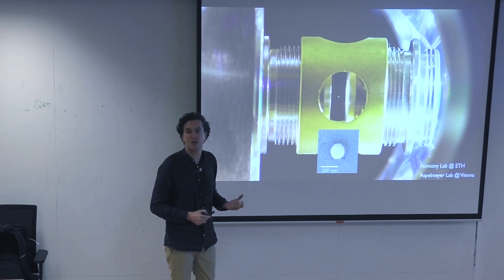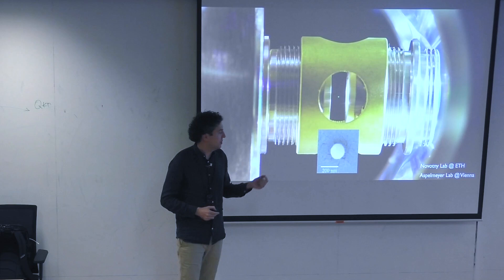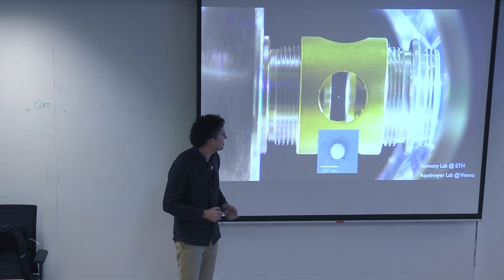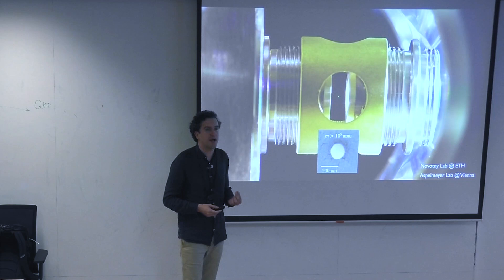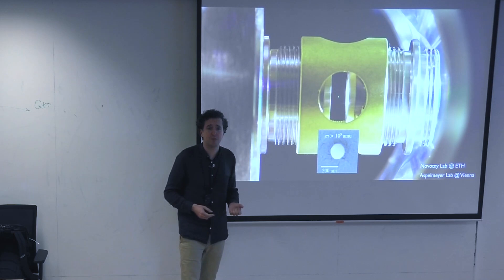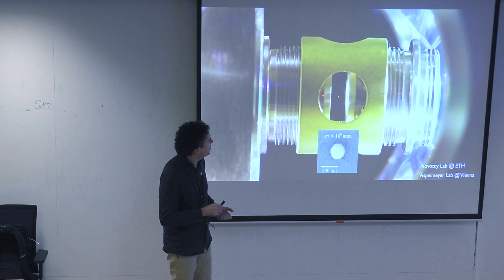This is really a piece of glass like the glass we have in a window, but it has a size of around 100 nanometers. That means this is an object that has a mass of 10 to the 9 atomic mass units — quite a much more massive object, nine orders of magnitude more massive than a single atom. What we see here is actually the scattered light coming from the laser light used to trap this particle in a vacuum chamber.